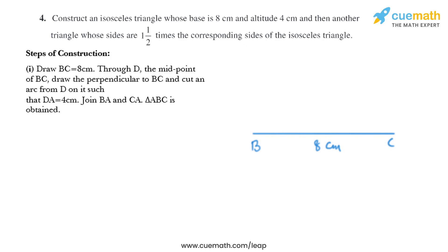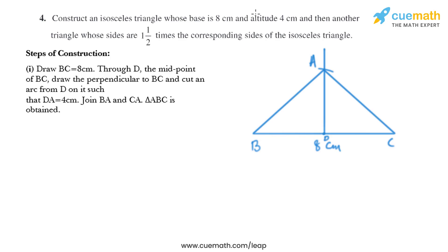Now I'll take the midpoint of BC as D and draw a perpendicular on it. Then we'll draw an arc DA equal to 4 centimeters, and we'll mark the point of intersection as A. Then we need to join AB and AC — so we have got triangle ABC.